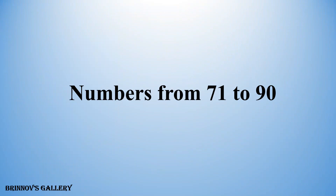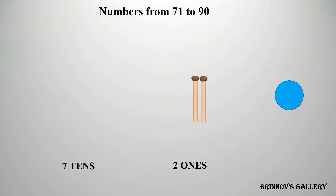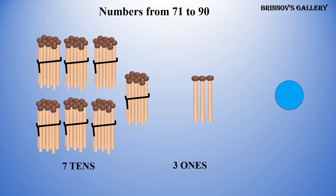Numbers from 71 to 90. 7 tens, 1 one — 71. 7 tens, 2 ones — 72. 7 tens, 3 ones — 73.